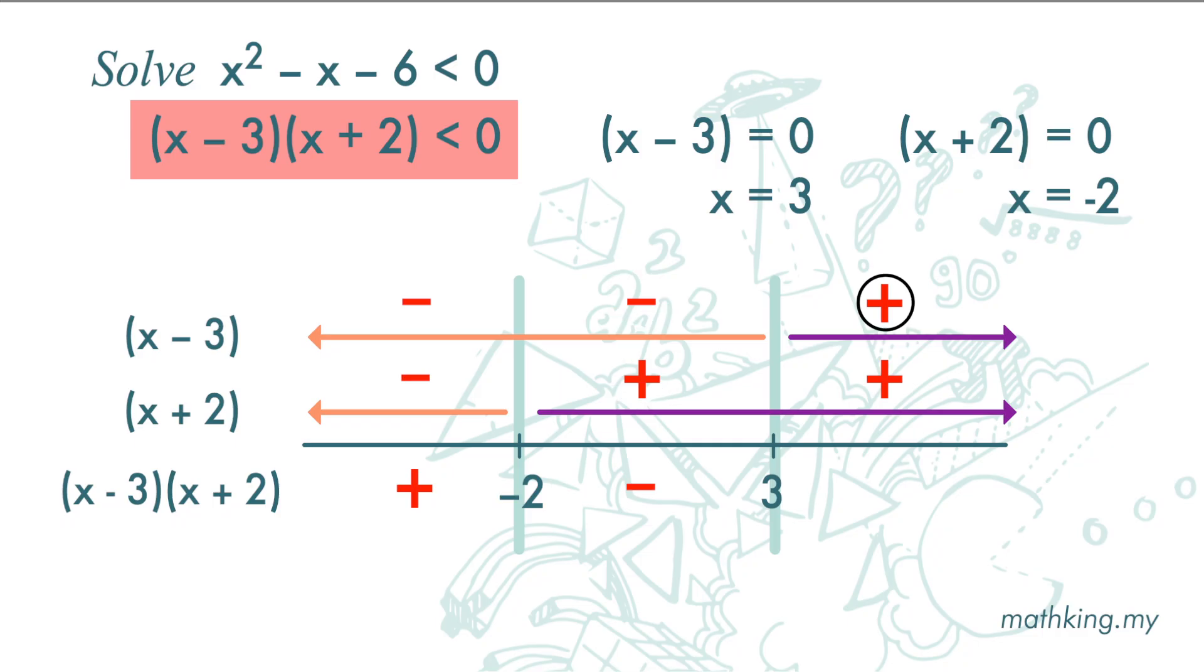Positive of x minus 3 times x plus 2 we get positive. So x minus 3 times x plus 2 is less than 0 is here in the negative region. And at this region x is greater than negative 2 but less than 3.